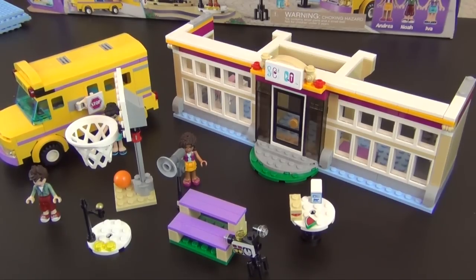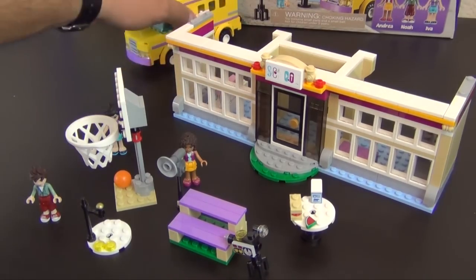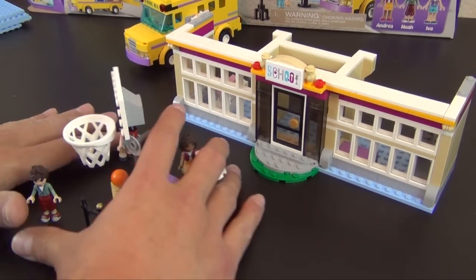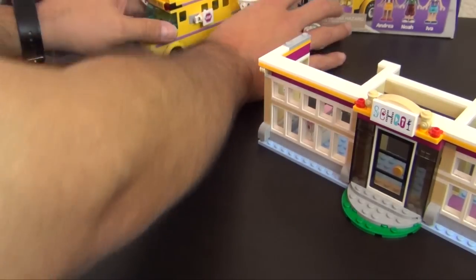Hey everyone, welcome back to the Hidden Brick where today we're doing part two of the build of the LEGO Friends Heartlake Performance School. This is how far we made it in part one. If you missed it, check it out, there's a link down below.